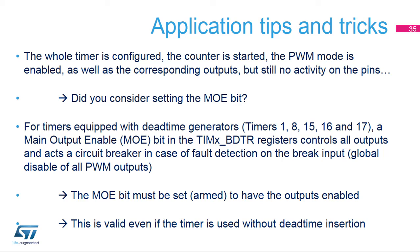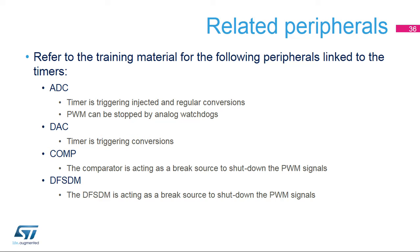A common support case occurs when the timer is configured, the counter started, the PWM mode enabled, and the corresponding outputs enabled, but still there is no activity on the pins. Usually this is because the MOE bit was not set. For timers equipped with dead-time generators (timers 1, 8, 15, 16, and 17), a main output enable (MOE) bit in the TIMX_BDTR register controls all outputs and acts as a circuit breaker in case of fault detection. The MOE bit must be set to have the outputs enabled, even if the timer is used without dead-time insertion for general-purpose applications. The timer also serves as a trigger source for the ADC and DAC, and receives signals from the ADC's analog watchdog, comparator, or DF-SDM filter.